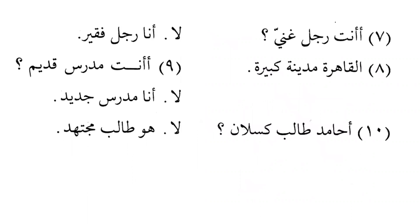Next: 'A-anta rajulun ghaniyyun?' — Are you a rich man? The answer: 'La, ana rajulun faqirun' — No, I am a poor man. Ana is the subject, rajulun is the predicate — rajulun is the masuf and faqirun is the sifah. So we can see that ana is the subject, rajulun is the predicate, and the adjective for rajulun is faqirun — I am a poor man.